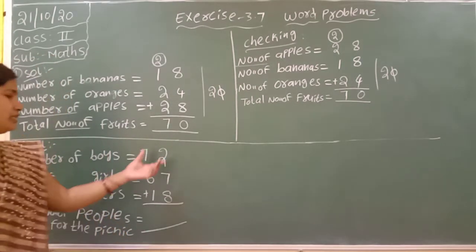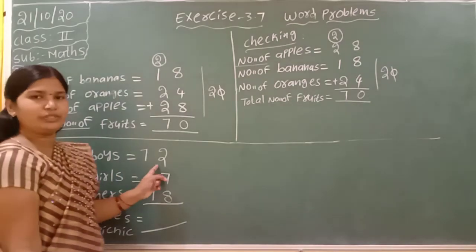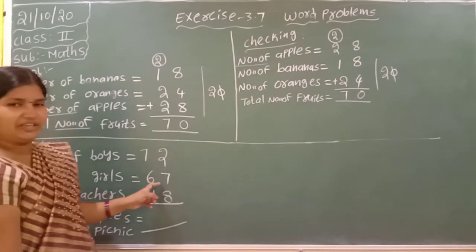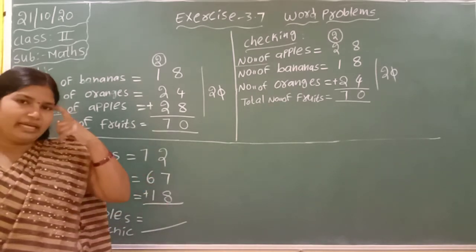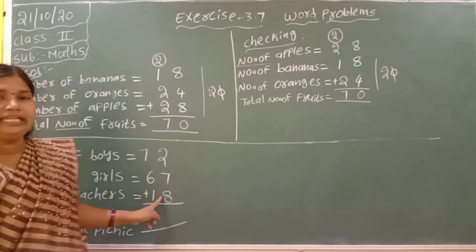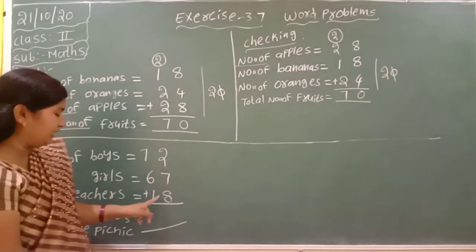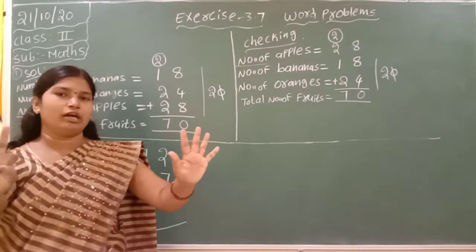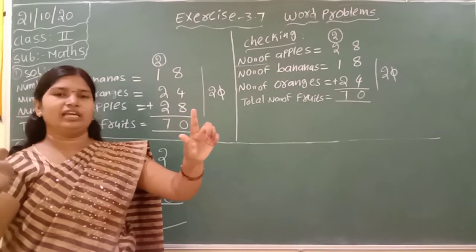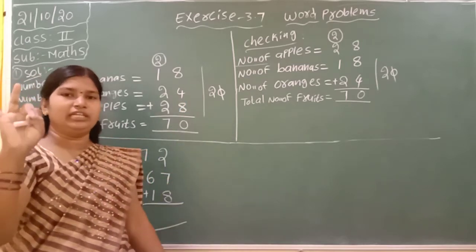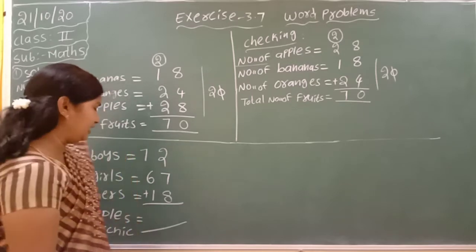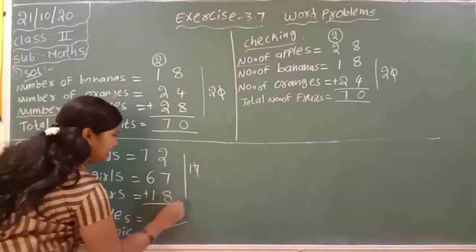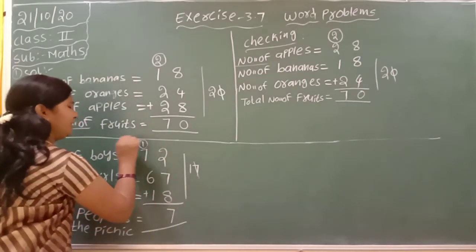Now add the ones place: 2, 7, 8. Two plus seven is nine. Nine in the mind, take eight fingers — ten, eleven, twelve, thirteen, fourteen, fifteen, sixteen, seventeen. Write seven in the ones place, carry one to the next place. Regrouping.